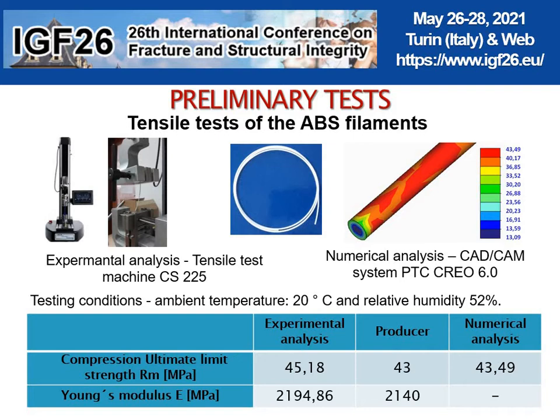Maximal limit strength of ABS filaments tested experimentally on 5 pieces of length 100 mm ranged from 40.7 MPa to about 50 MPa, giving an average of 45.18 MPa.